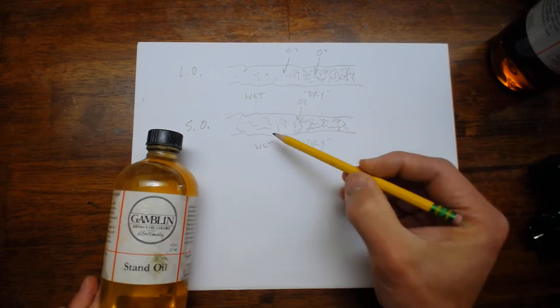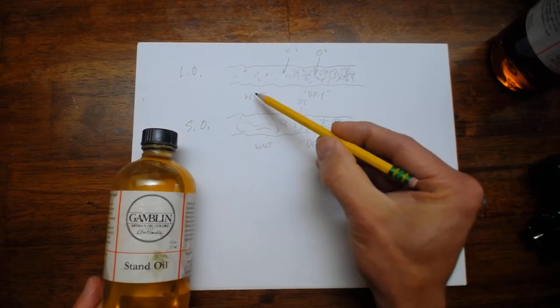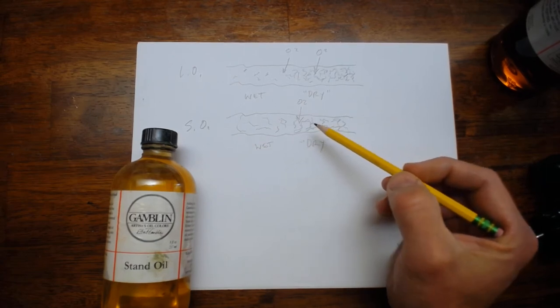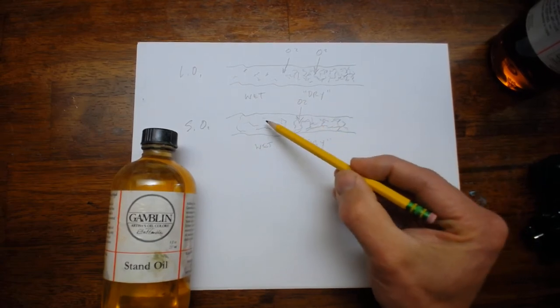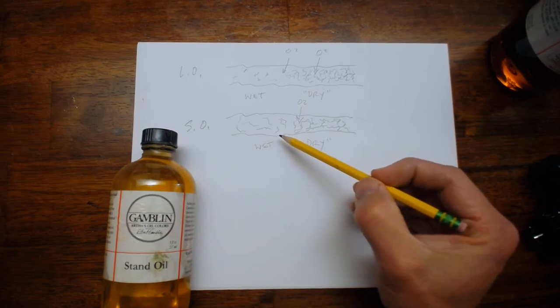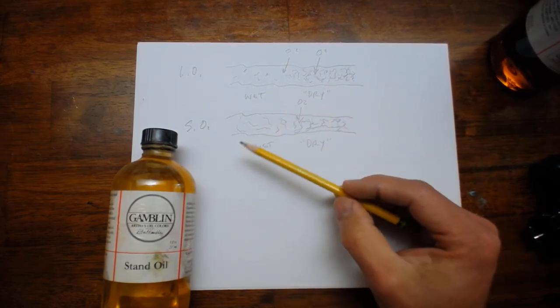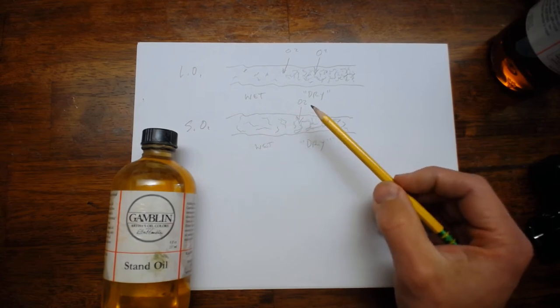Think of stand oil as a linseed oil that has maybe a 50-yard head start in its drying process through that polymerization that's happened through heat when the oil is produced. So stand oil is considered a polymerized oil.